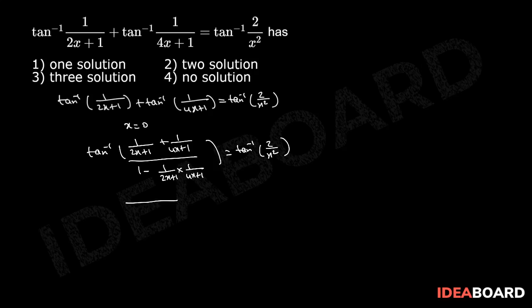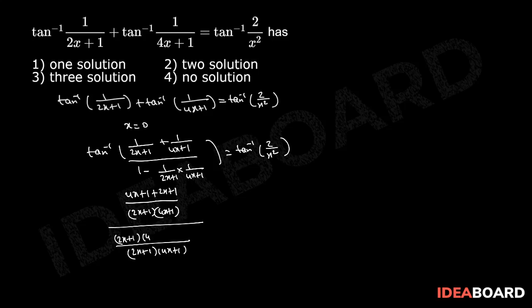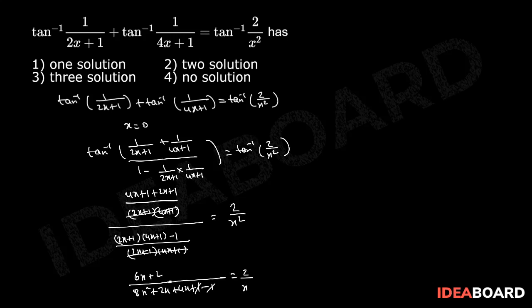In the numerator, the LCM is (2x+1)(4x+1), giving (4x+1) plus (2x+1). In the denominator, the LCM is also (2x+1)(4x+1), giving (2x+1)(4x+1) minus 1. The denominators cancel, so we have (6x+2) by (8x square plus 2x plus 4x plus 1 minus 1). The 1's cancel, leaving (6x+2) by (8x square plus 6x) equals 2 by x square.